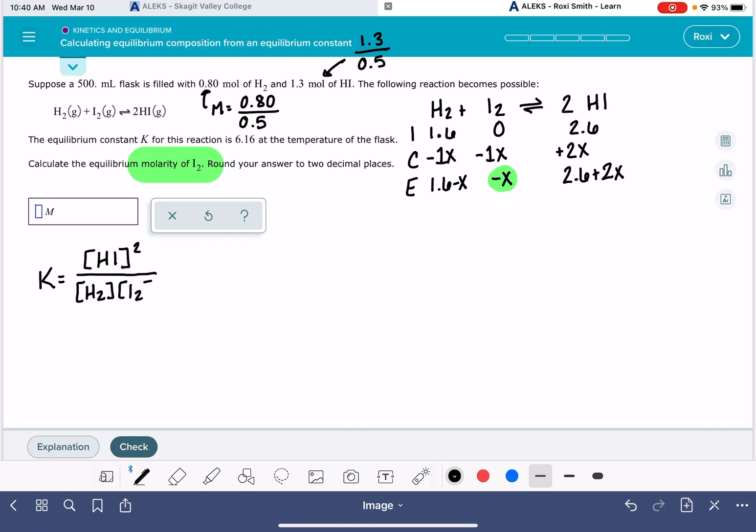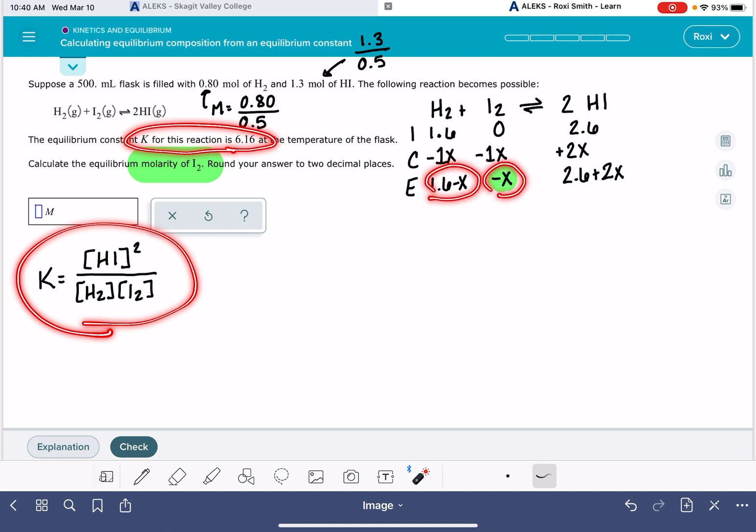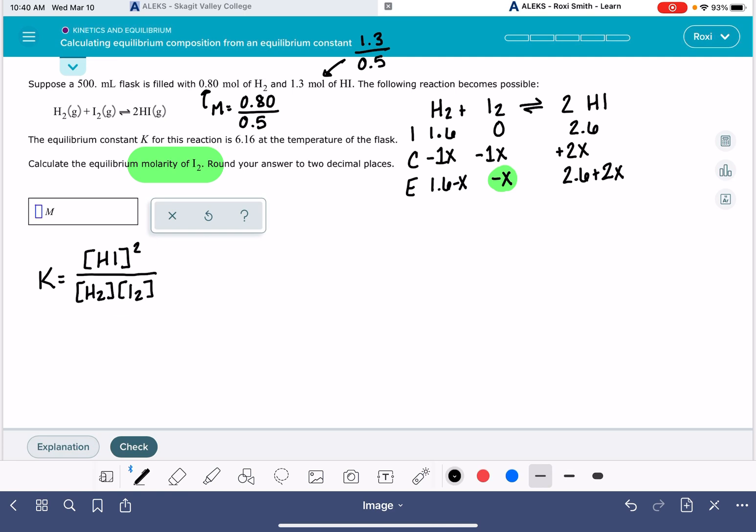We're going to plug in everything that we know in this equilibrium expression. We know the value of the equilibrium constant and we know terms for all of the substances. So the equilibrium constant is 6.16. The expression for HI is 2.6 plus 2X, and that needs to be squared because of the coefficient in the balanced equation. And then our reactants, 1.6 minus X for H2 and negative X for I2.